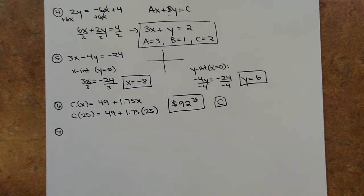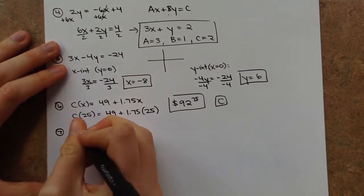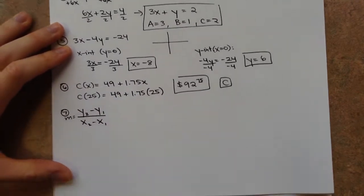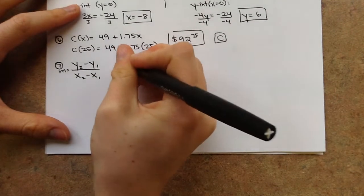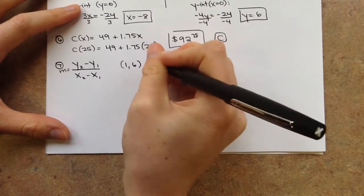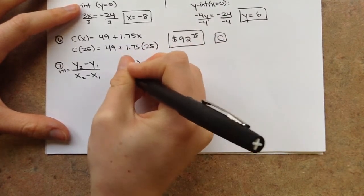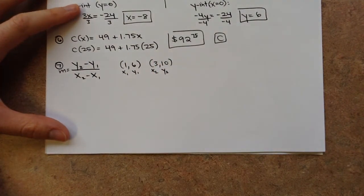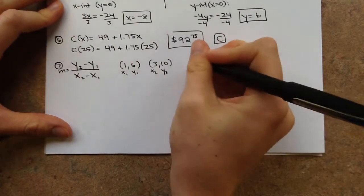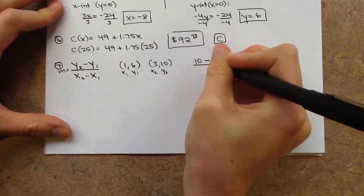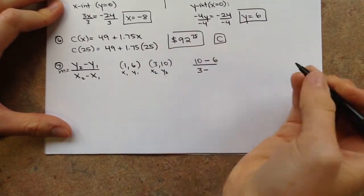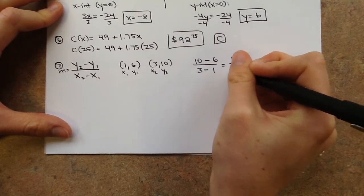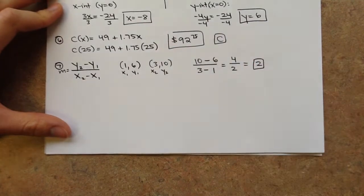Number 7: find the slope of the line passing through each pair of points. The formula is m equals (y2 minus y1) over (x2 minus x1). I have points (1, 6) and (3, 10). Let (1, 6) be (x1, y1) and (3, 10) be (x2, y2). So m equals (10 minus 6) over (3 minus 1) equals 4 over 2, which reduces to a slope of 2.